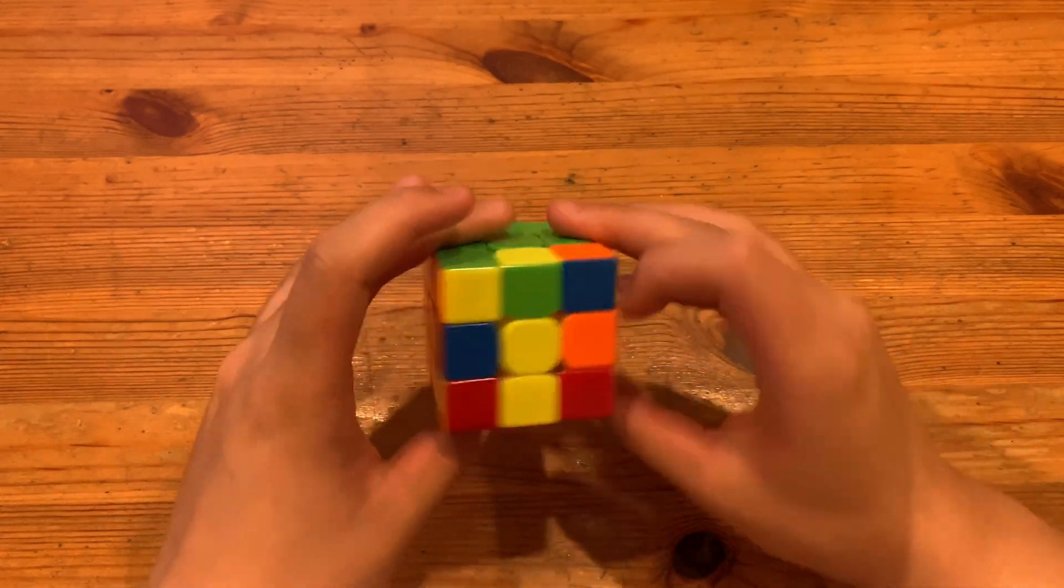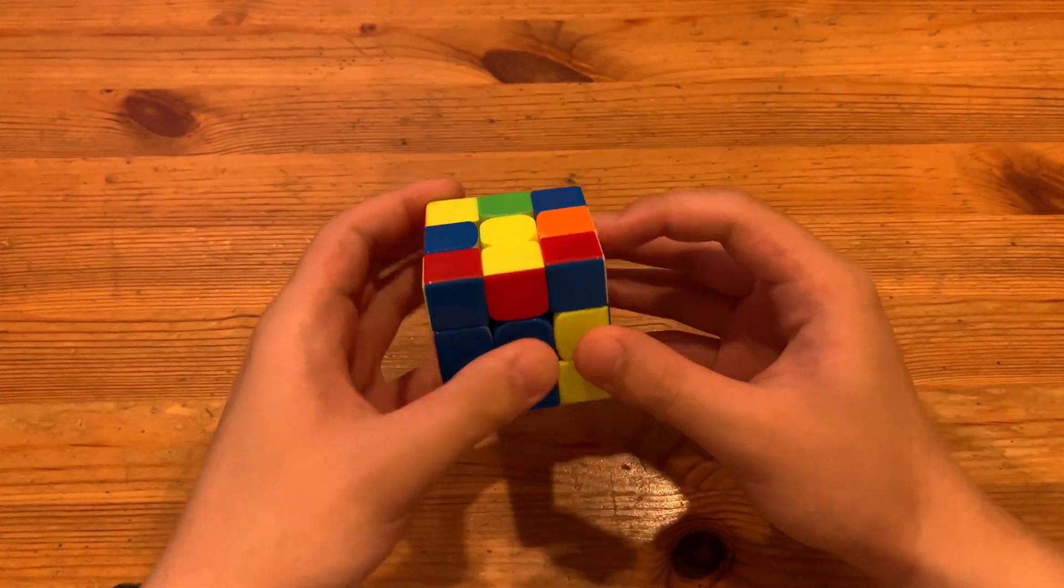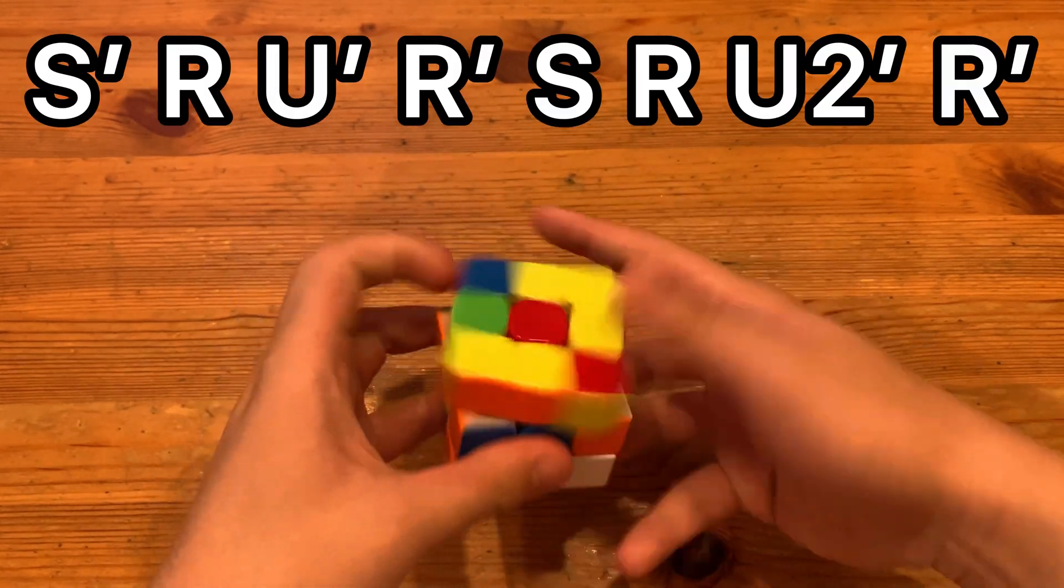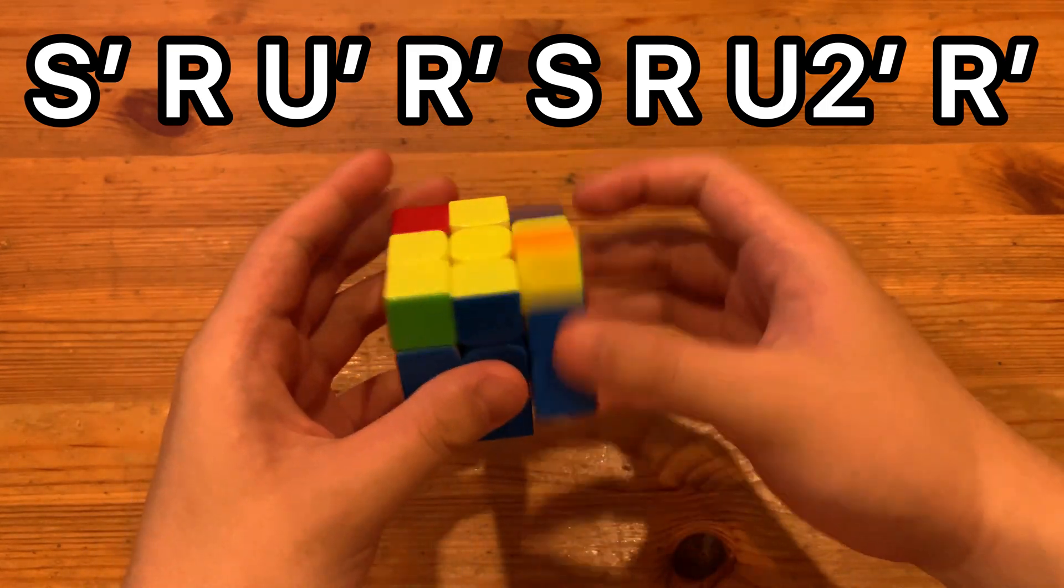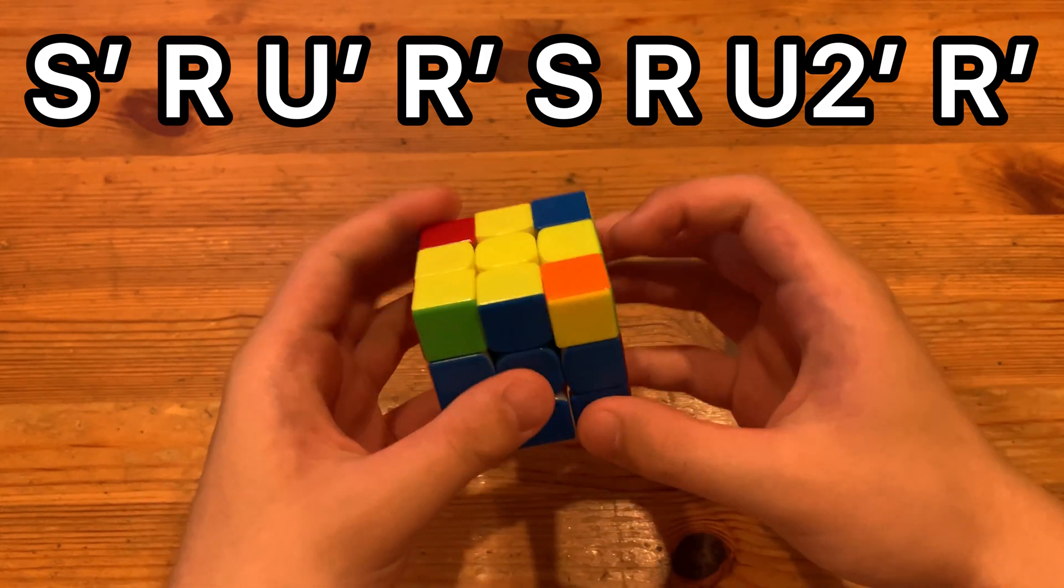So instead of AUFing or doing an RU solution, you just do that and this is so fast, like legit so fast, unless your cube pops.